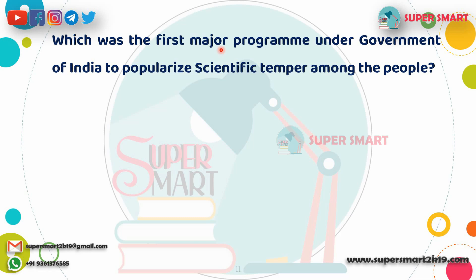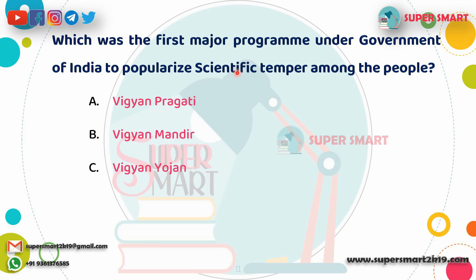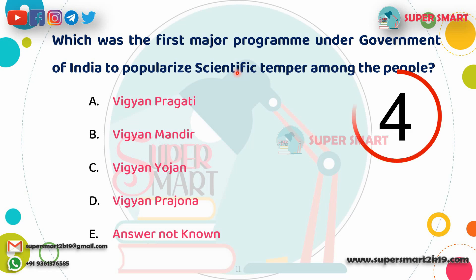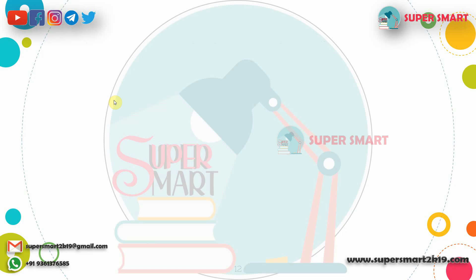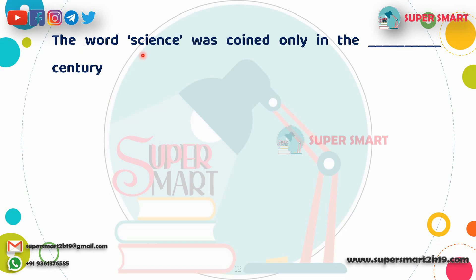Next question: Which was the first major program under the Government of India to popularize scientific temper among the people? The answer is Vigyan Mandir — the first major program under the Government of India.